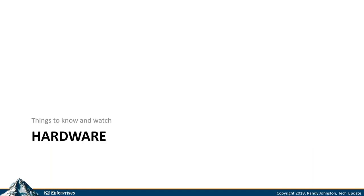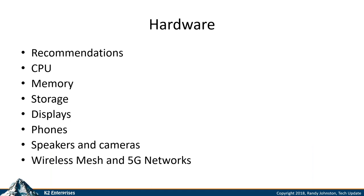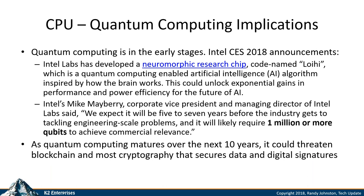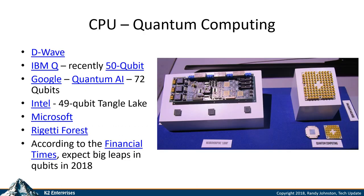Starting with hardware: quantum computing — we figure this is about 10 years out, but it is working today. Some of you use weather.com, which is powered by a quantum computer, so you're already using quantum computing without knowing it. Quantum computing today can break any of the blockchains out there and any cryptography currently in use. Big players are competing here — is it ready today? No. Will it be ready in 10 years? We figure yes, although you can buy one this afternoon from D-Wave.